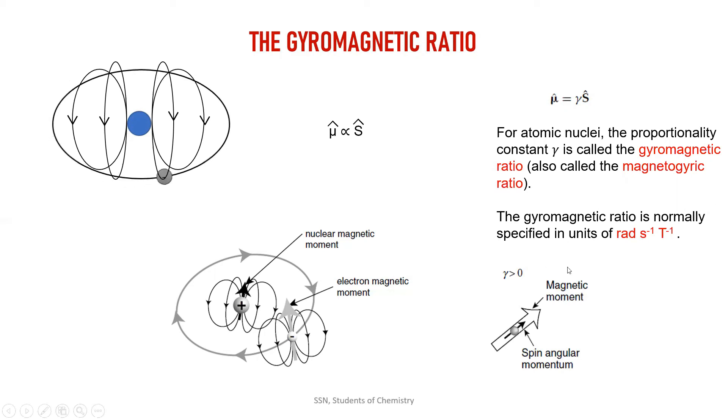If my gyromagnetic ratio value is positive, then my spin angular momentum is going to align along the field of my magnetic moment. If my gyromagnetic ratio is negative, you can also see from here this formula: if my gamma is positive, mu is equal to positive spin angular momentum. If my gamma is negative, mu is equal to minus spin angular momentum.